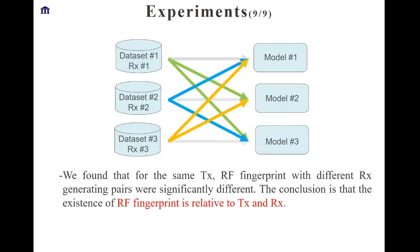The figure clearly describes the relationship between RX data sets and models in this experiment. Through this experiment, we find that for the same transmitter, the RF fingerprints generated with different TX-RX pairs are significantly different. Therefore, the existence of RF fingerprints is relative to both the transmitter (TX) and the receiver (RX).